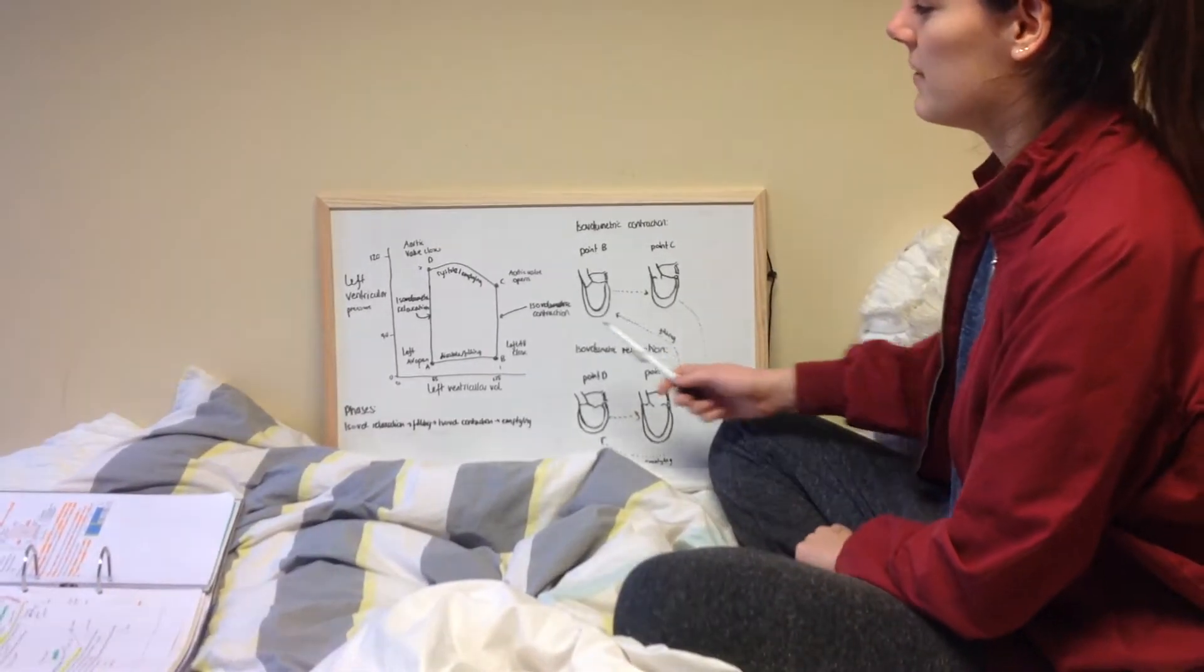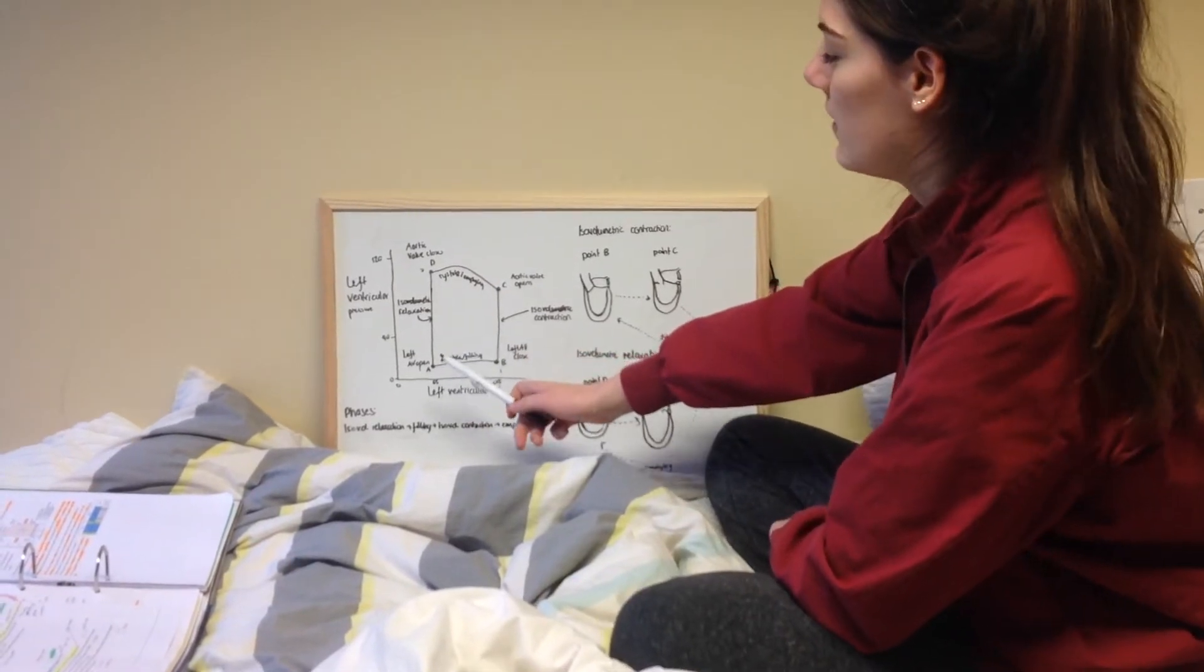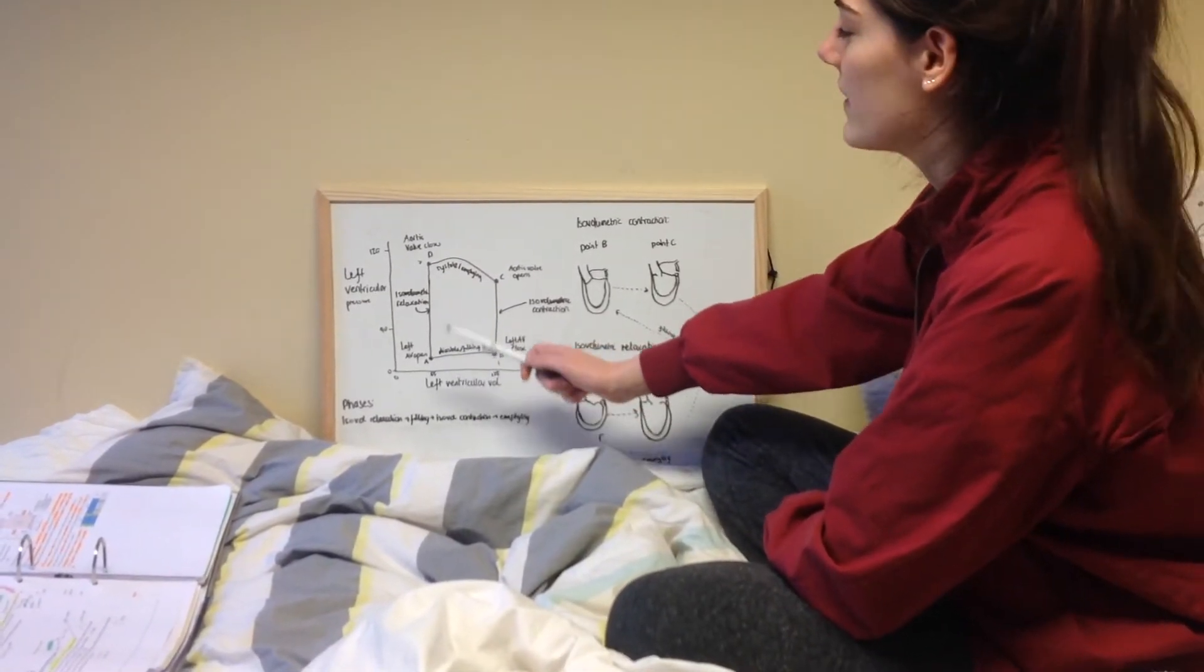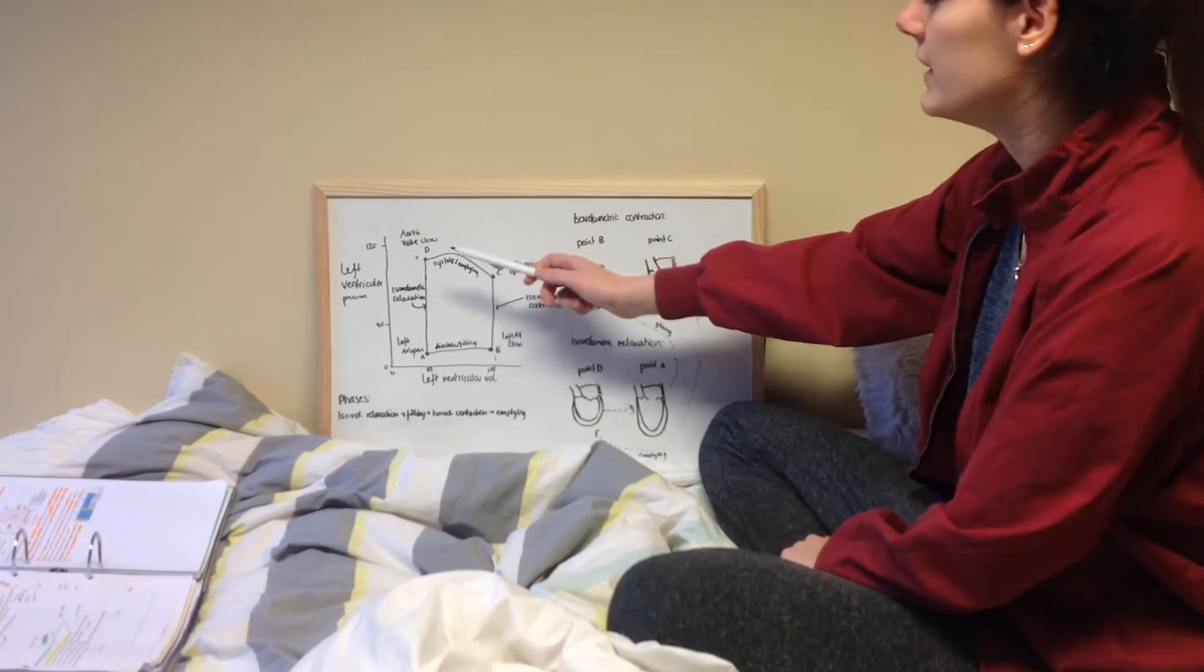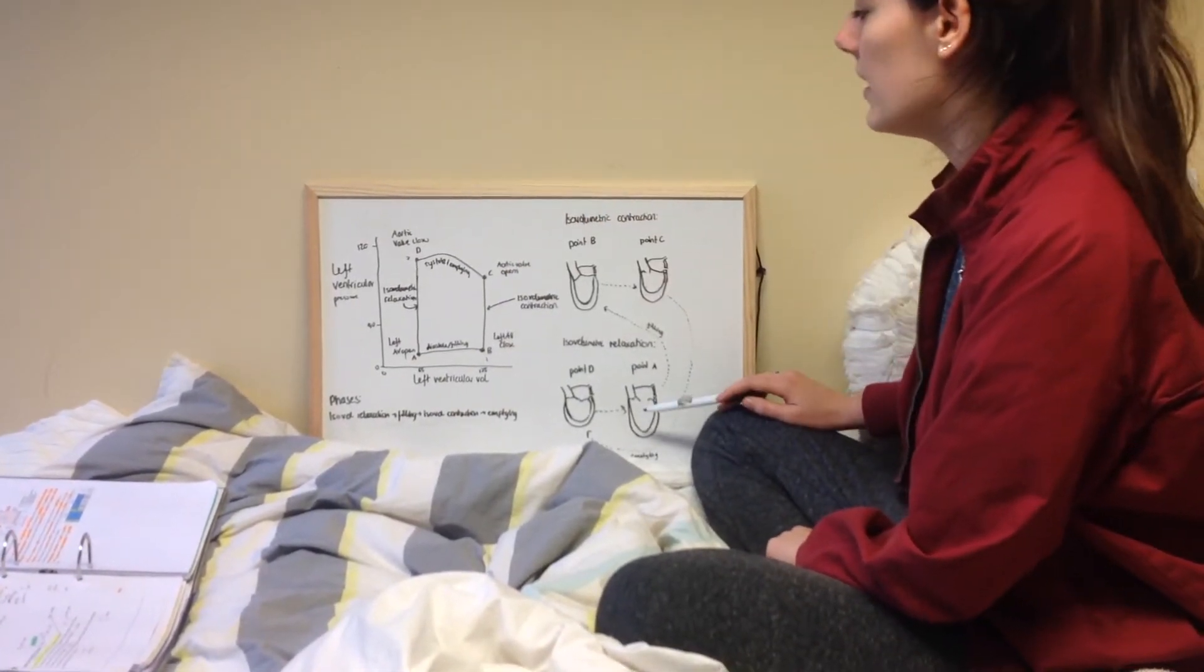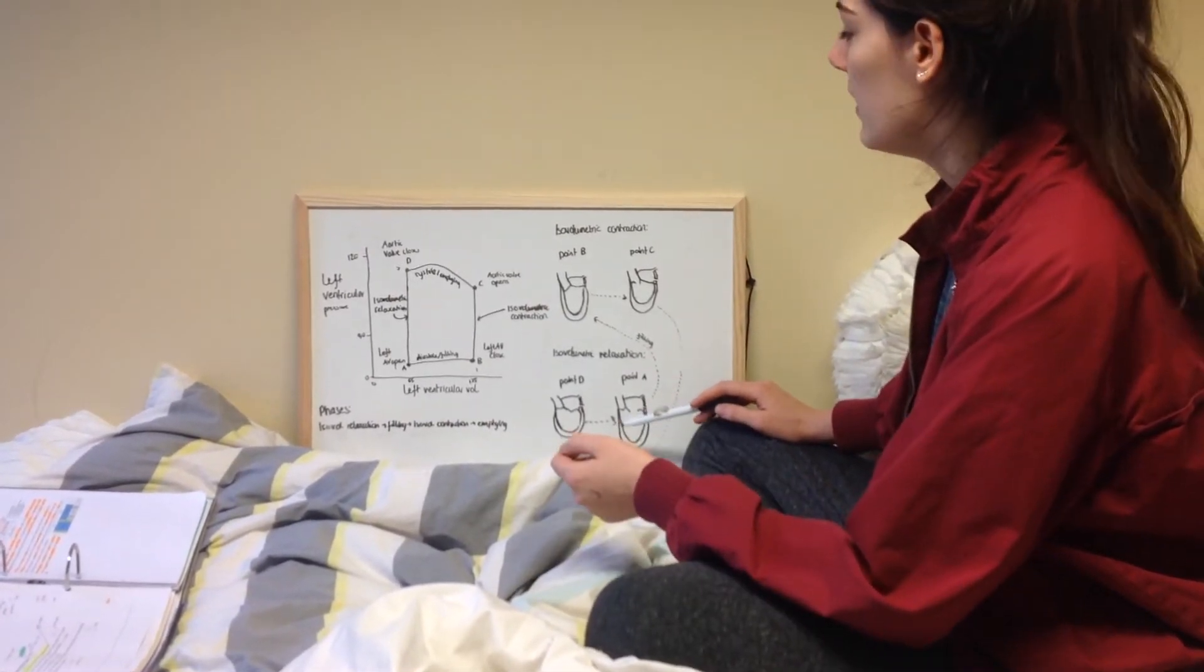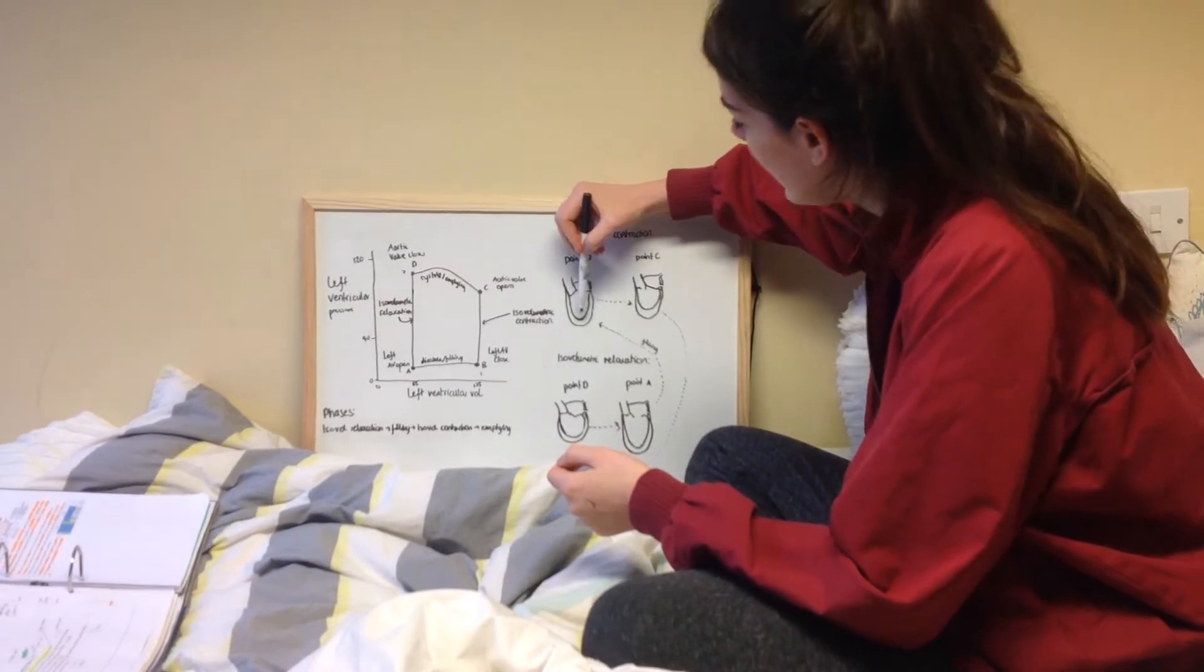I'm going to start the explanation at point A, and this is the end of isovolumetric relaxation. The left atrioventricular valve is open and the aortic valve is closed. The pressure in the ventricle is low. There's diastole where there's filling, so the volume will increase slightly.